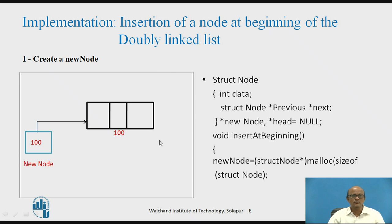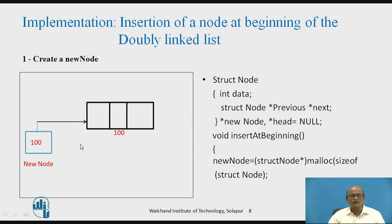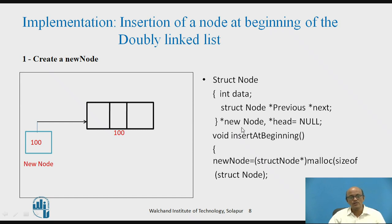Now the implementation of insertion of a node at the beginning in a doubly linked list. We create a new node — assuming memory is allocated at location 100 — held by the pointer new_node. We declare a structure of type struct node with three parts: an integer data, and two pointers next and previous of type struct node. Variables new_node and head are declared, with head initially assigned null.